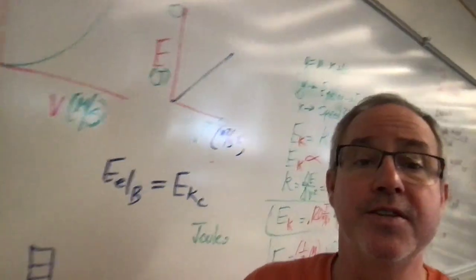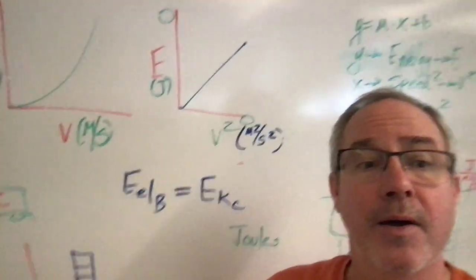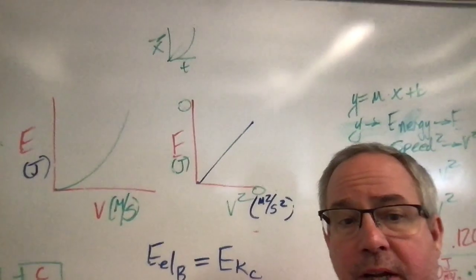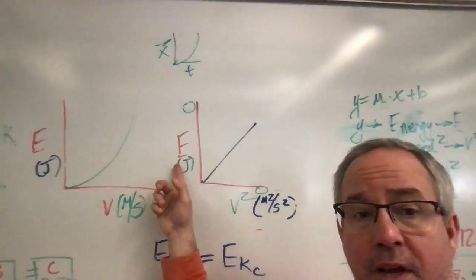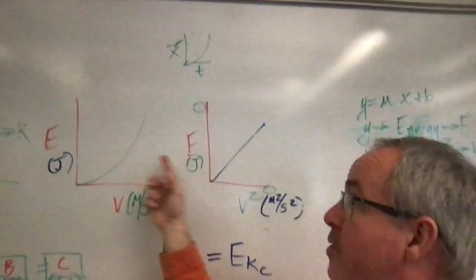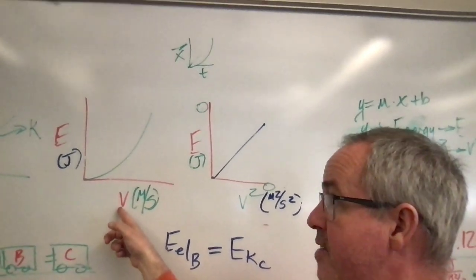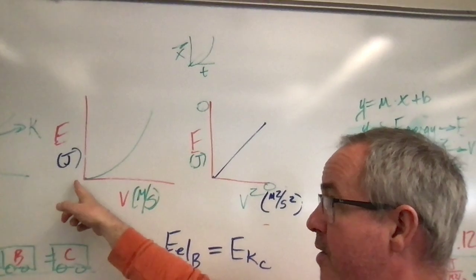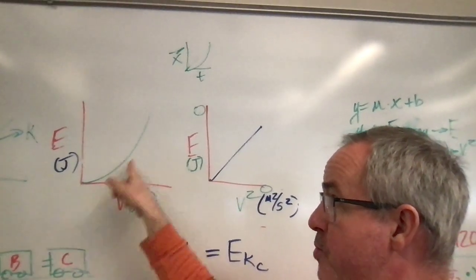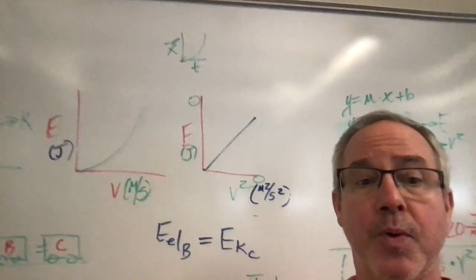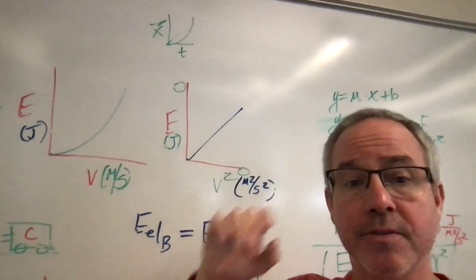Yesterday when kids were in class they compressed the cart into the spring storing elastic energy and from that measuring the speed of the car as it left, and as the energy got bigger the speed increased as well, and we had this top open curve.